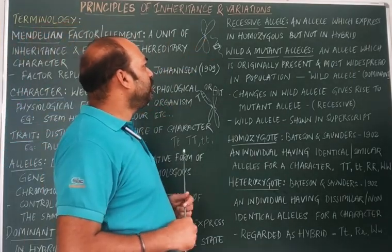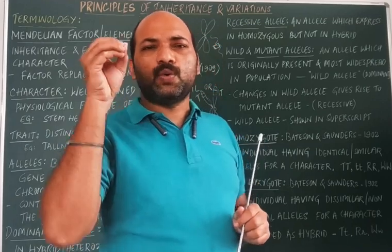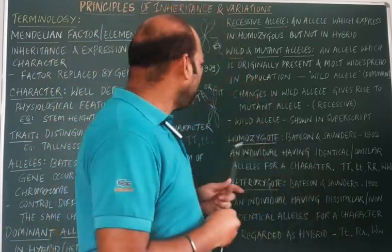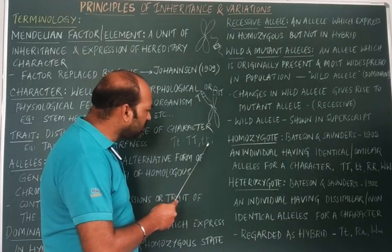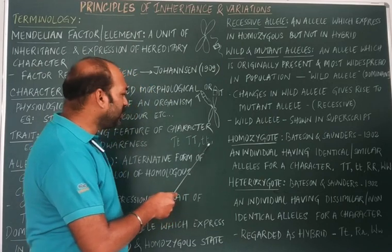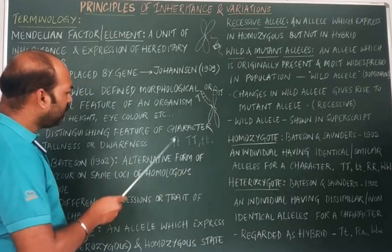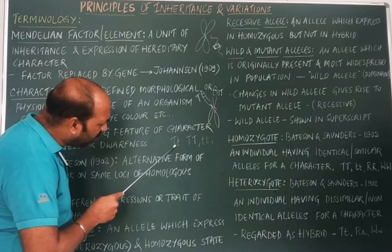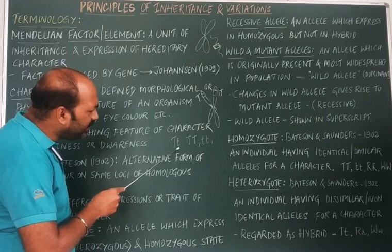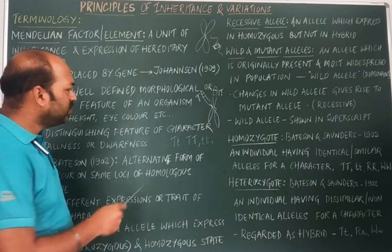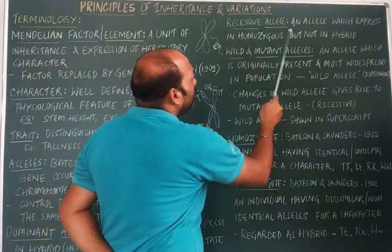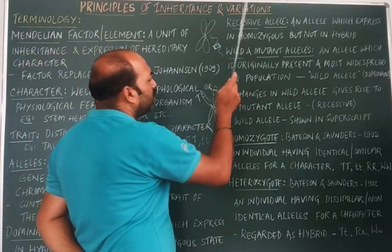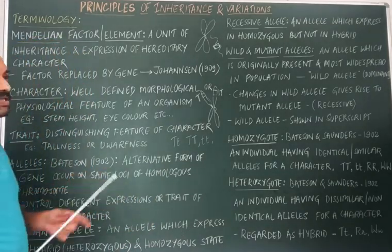A recessive allele is one that only expresses in the homozygous condition, but not in the heterozygous condition. For example, small t small t — only in this condition does the recessive allele express. In a heterozygous condition, the dominant allele suppresses the activity of the recessive allele, so the recessive allele is unable to express when a dominant allele is present. Recessive alleles are always written in small letters, while dominant alleles are always written in capital letters.